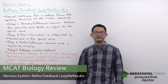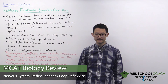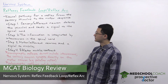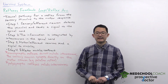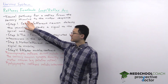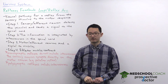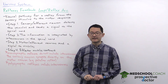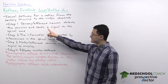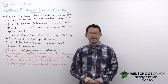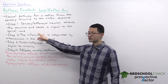In this video we're going to go over reflexes, feedback loops, and reflex arcs. Reflex arcs refer to the neural pathway for reflexes, starting from the sensory stimulus and going all the way to the motor response. In general, reflexes follow the same steps. The first step is a sensory or afferent neuron detects the stimulus and then sends a signal to the spinal cord.